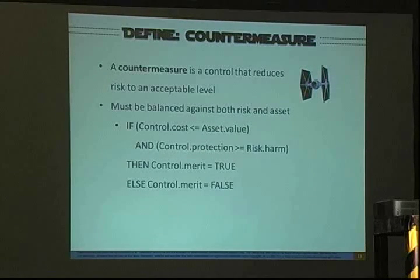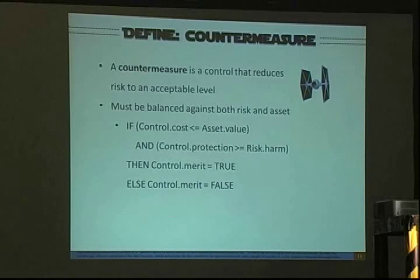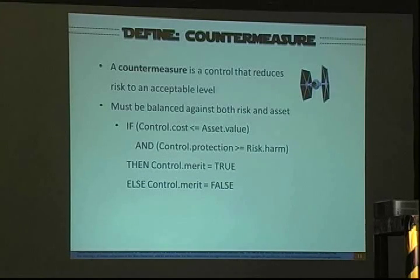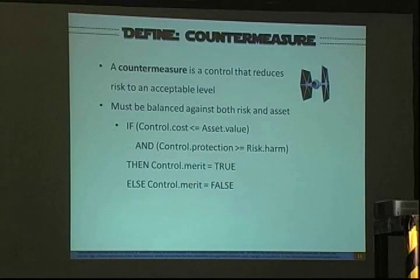Countermeasures are the controls that reduce risk to an acceptable level — the key word is acceptable. You're never going to get rid of risk; there will always be things you don't know that are going to hurt you. The idea is to balance it against both the risk and the asset. The cost of the control has to be less than or equal to the asset value — we're not going to spend a million dollars to protect something worth a hundred. And the protection we implement has to be stronger than or at least equal to the risk.